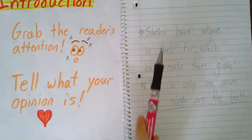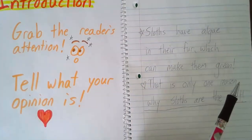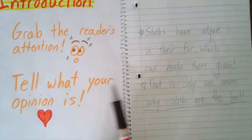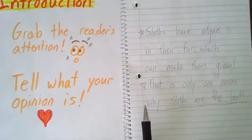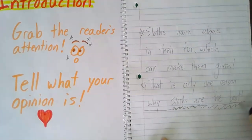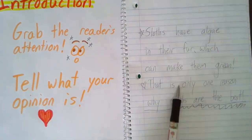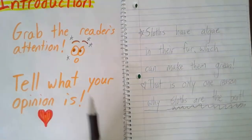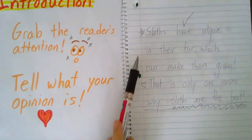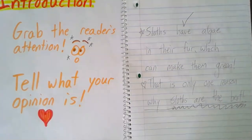I'm going to look at the really cool interesting fact one and make sure it has two parts — grabbing the reader's attention and telling what your opinion is. I grabbed the reader's attention with 'sloths have algae in their fur, which can make them green.' That's my special fact, and then 'that is only one reason why sloths are the best' — that's how I feel. So this introduction is done. I grabbed the reader's attention and told you what my opinion was.